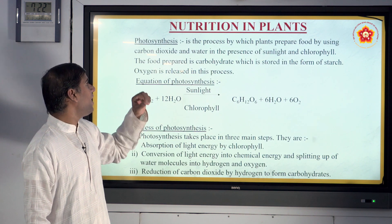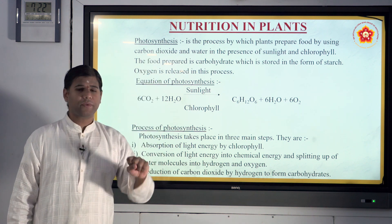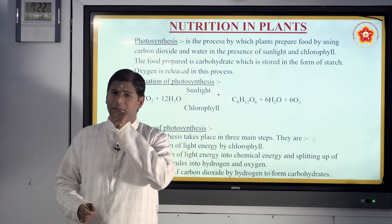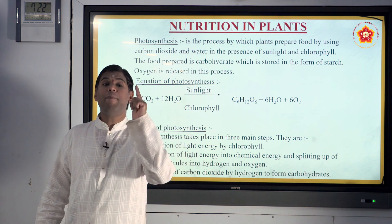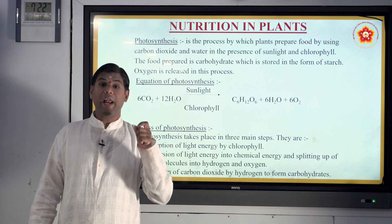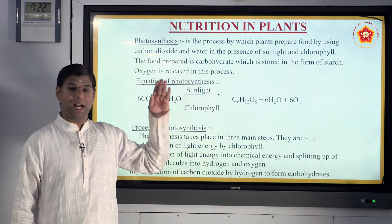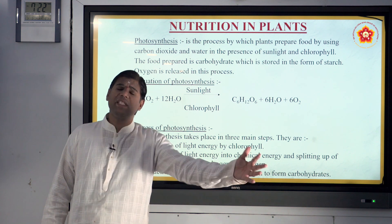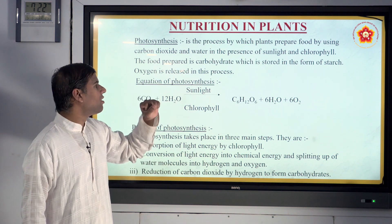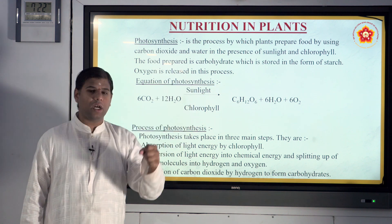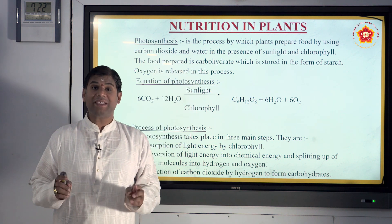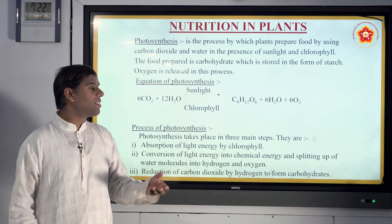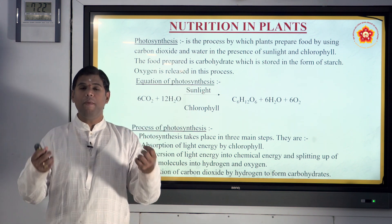Coming to nutrition in plants — one key process is photosynthesis. Plants get their green color because of a pigment called chlorophyll, a green pigment present in plants. In photosynthesis, plants prepare their food in the presence of carbon dioxide and water using sunlight. The food is prepared as carbohydrate and stored in the form of starch. Oxygen is released from this process.